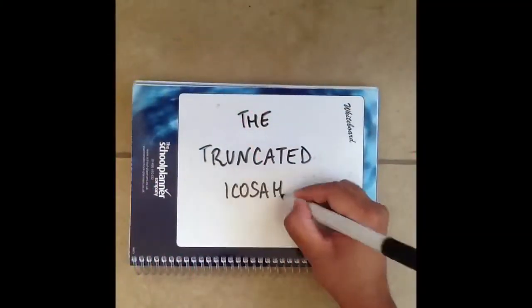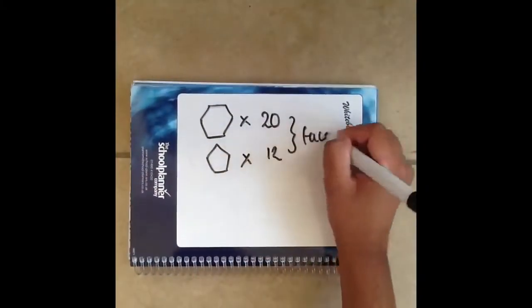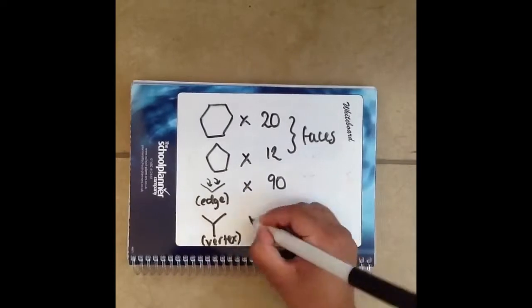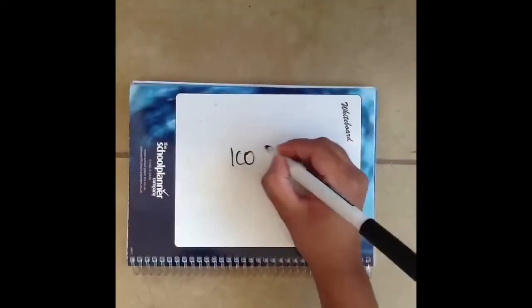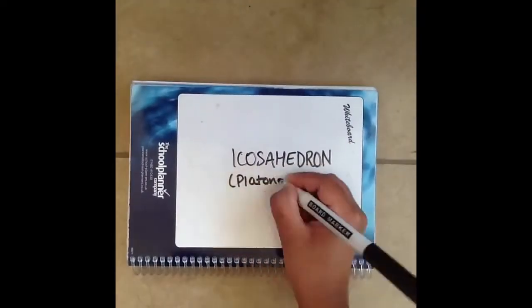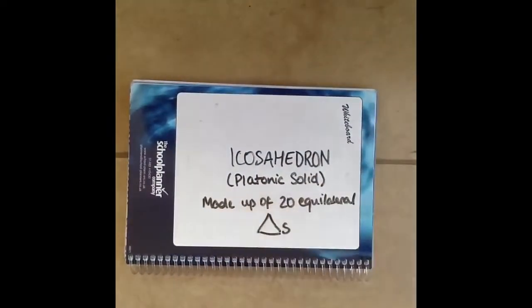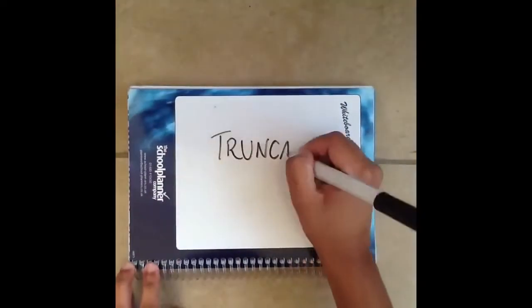The truncated icosahedron has 20 hexagon faces and 12 pentagon faces. It has 90 edges and 60 vertices. It is derived from the icosahedron, a platonic solid with 20 triangle faces. So how do you derive it?